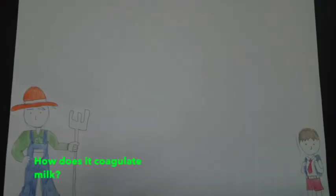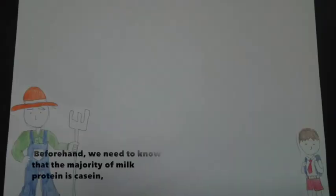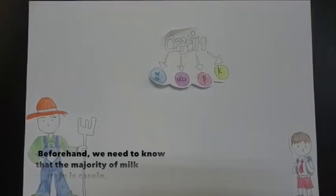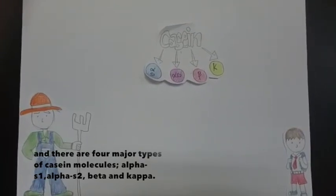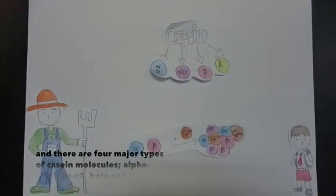How does it coagulate milk? Beforehand, we need to know that the majority of milk protein is casein. And there are four major types of casein molecules: alpha-S1, alpha-S2, beta and kappa.